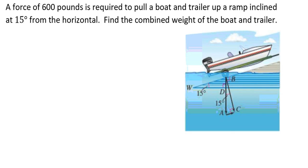In this example, a force of 600 pounds is required to pull a boat and a trailer up a ramp inclined at 15 degrees from the horizontal. We're supposed to find the combined weight of the boat and the trailer. Let's take a look at our picture and what exactly we've been given and what exactly we know.